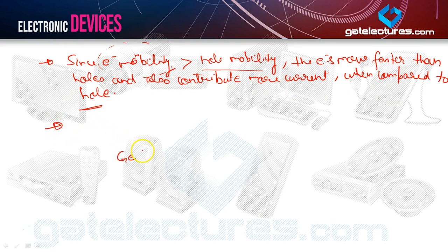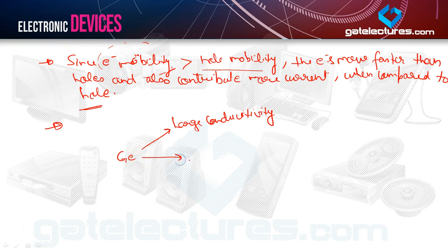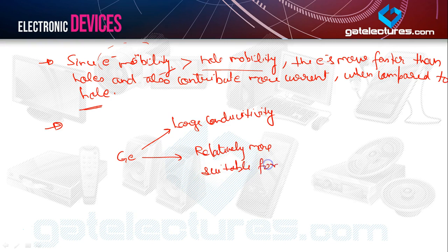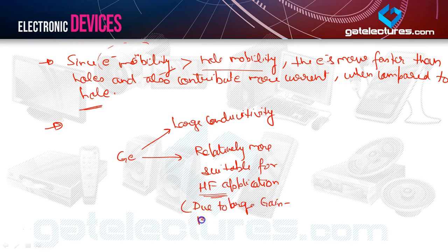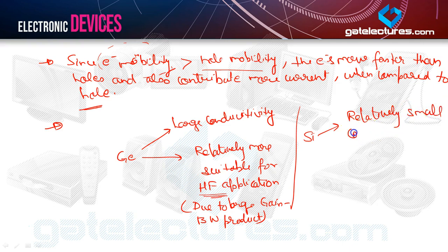Germanium has large conductivity and is relatively more suitable for high frequency applications. Germanium is used for high frequency applications due to its large gain bandwidth product. Silicon, on the other hand, has relatively small conductivity, because conductivity depends upon mobility — I will discuss conductivity in a later section.